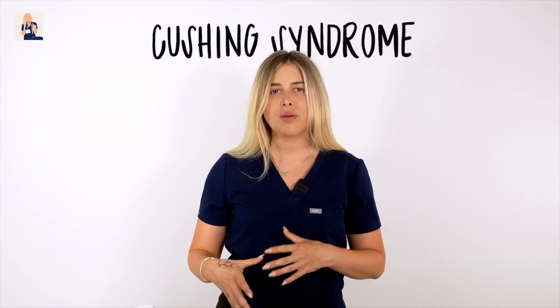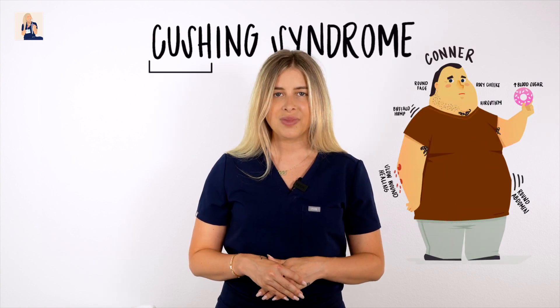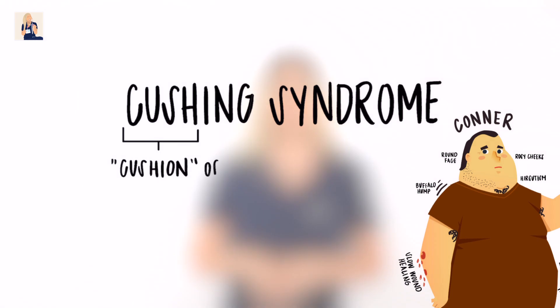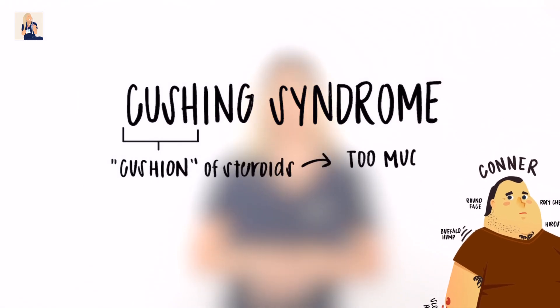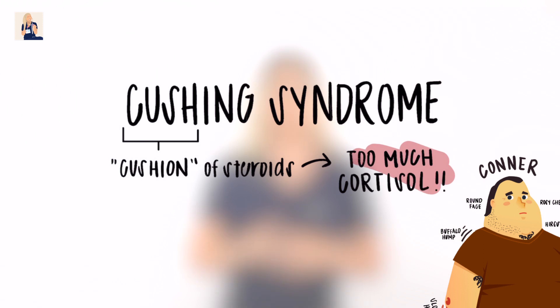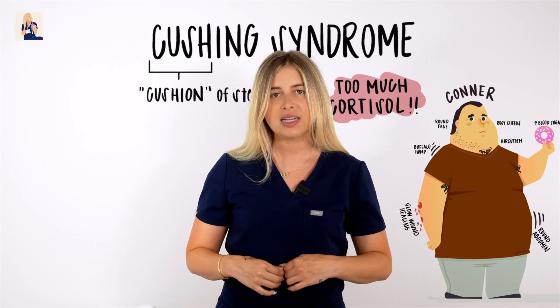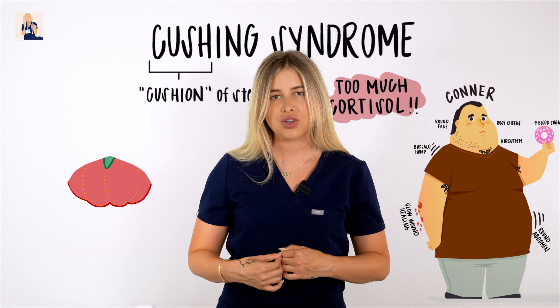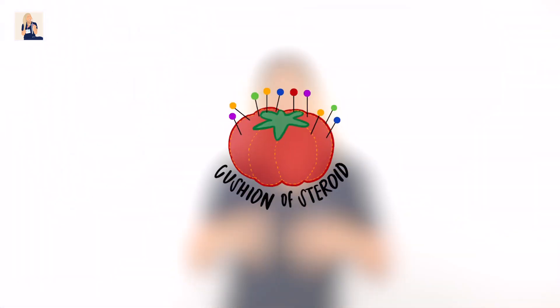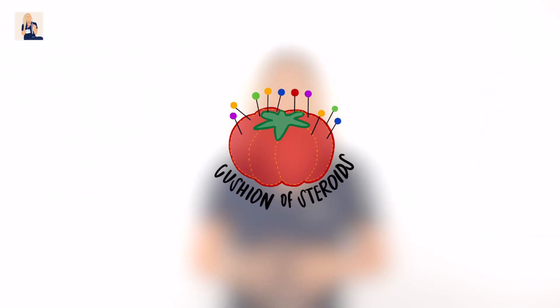Let's look at the complete opposite now, and that's Cushing syndrome — or our big buff man, Cushy Connor. Cushing syndrome occurs when the adrenal glands produce too many steroid hormones, specifically cortisol. When we have an adrenal gland that is over-executing its normal functions, we experience Cushing syndrome — a cushion of steroids, or an excess in normal function that should not be there.